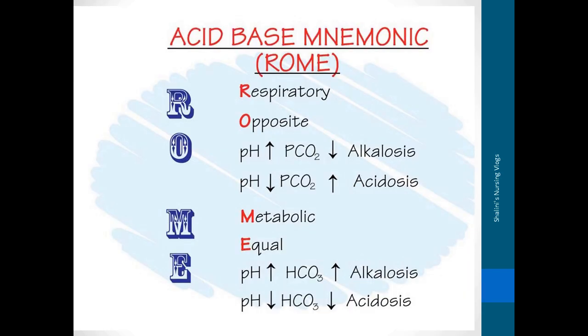This is a common acid-base mnemonic called ROME, used in ABG interpretation to identify acid-base imbalances. ROME means Respiratory Opposite, Metabolic Equal. For respiratory, you look at PCO2; for metabolic, you look at bicarbonate or HCO3. If respiratory, it's opposite - the direction of the defect is opposite. If pH increases, PCO2 decreases; if pH decreases, PCO2 increases. If metabolic, it's equal - if pH increases, bicarb increases; if pH decreases, bicarb decreases.